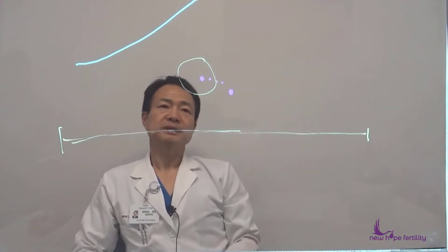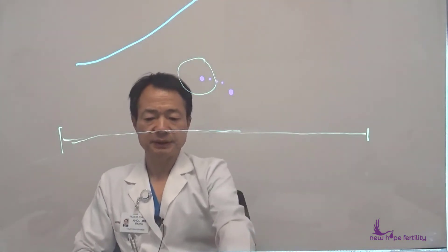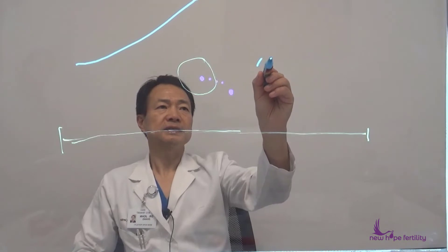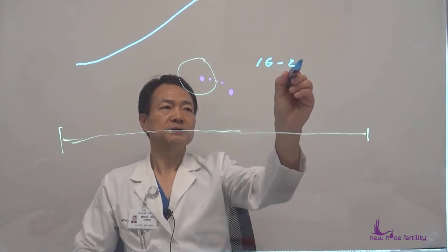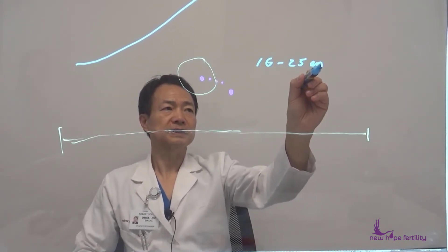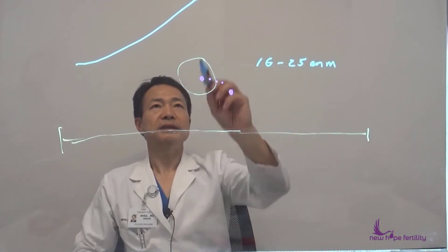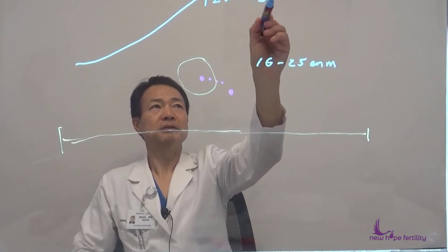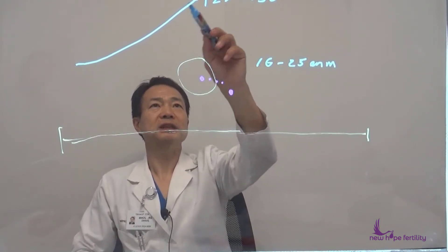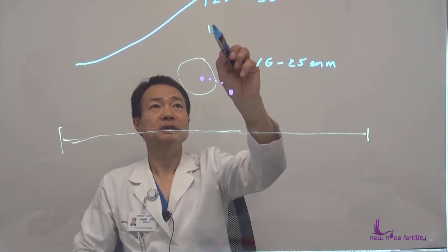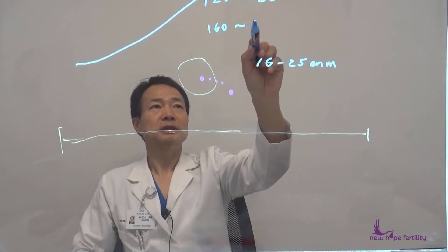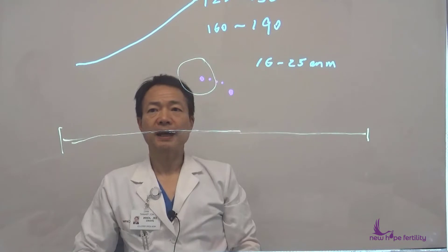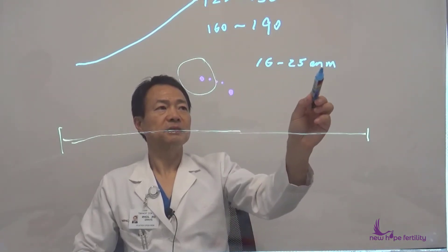Usually in the natural cycle, the follicle size will grow around 16 to 25 millimeters in diameter. Estrogen level can go from 120 to 150. As a matter of fact, with increasing age, the level actually gets higher and can go from 160 to 190. So the size could be 16 to 25 millimeters—it's a big range.